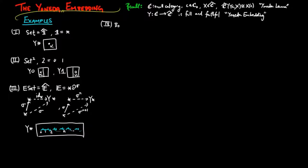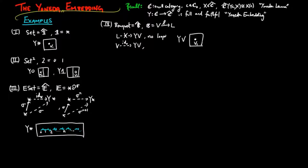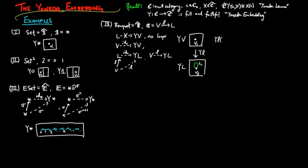For the category of bouquets, since there are two objects in B, there are two representables. The representable of V has one vertex V1 corresponding to the identity morphism on V, and no petals since there are no morphisms from L to V in the category B. The representable of L has one vertex corresponding to the morphism L in B, and one petal corresponding to the identity morphism of L. The morphism YL of pre-sheaves from YV to YL is then the morphism which takes the vertex V1 to VL.